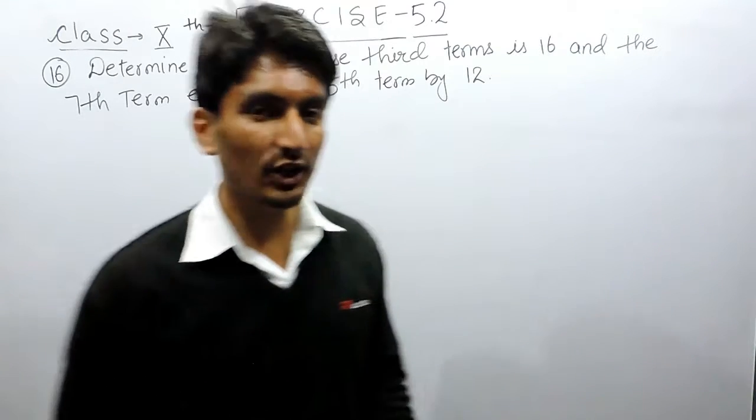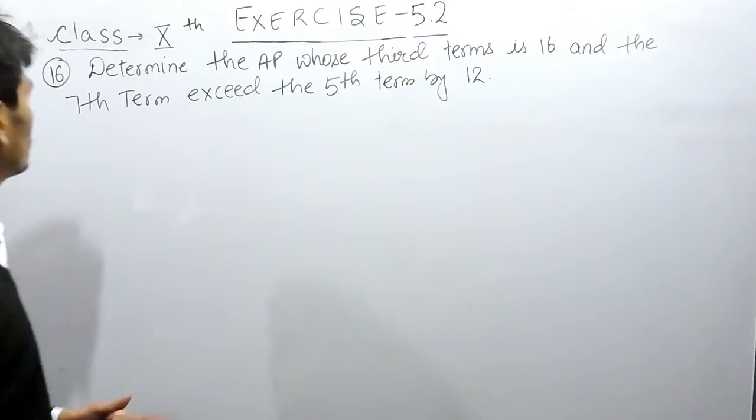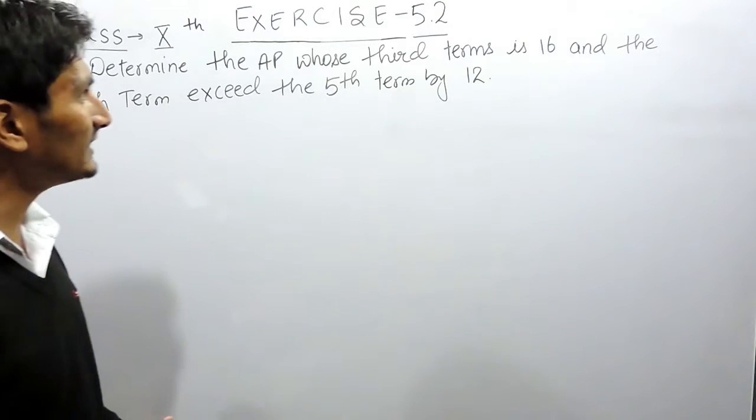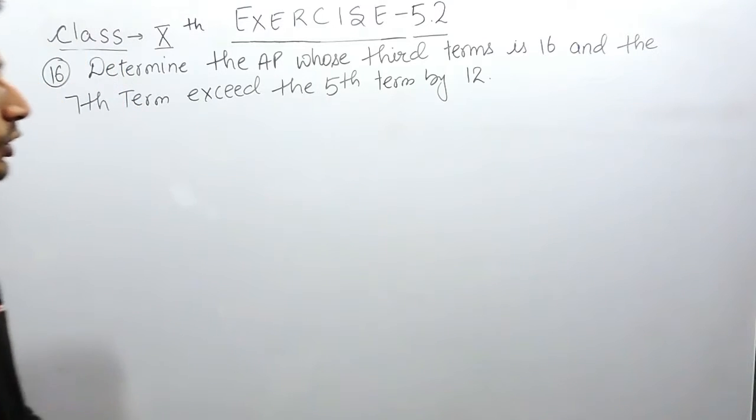Hello everyone, in this video we are going to solve question number 16 of exercise 5.2. The question says determine the AP whose third term is 16 and the seventh term exceeds the fifth term by 12.